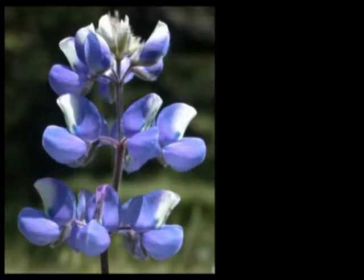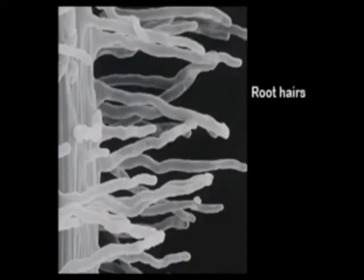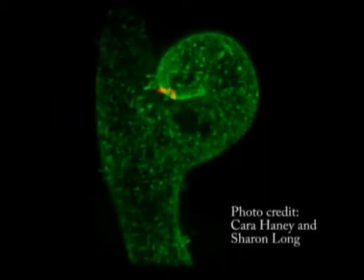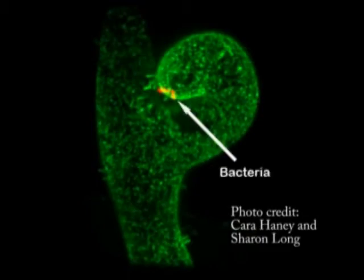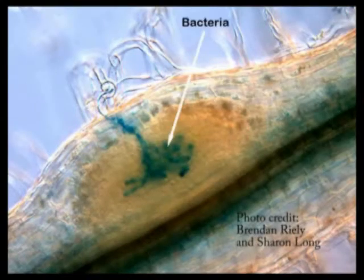A plant-microbe interaction that belongs in this category involves legumes, members of the pea family, such as the lupine shown here, and certain bacterial species. This interaction begins with recognition between a root hair and a bacterium. Here you can see the root hair, shown in green, beginning to coil around bacteria, which appear red in color. This results in formation of a root nodule, shown here in the early stages of development with bacteria, appearing blue in color, growing within the root.